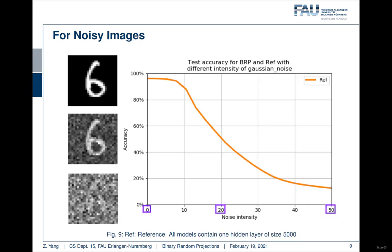Now let's see the performance of a normal fully connected network at zero noise intensity. We have around 95% accuracy. Then if we increase the noise level to 20 here, which is the second image, we have around 50% accuracy. We further increase the noise intensity to 50. We have now around 12% accuracy, which is just random guessing.